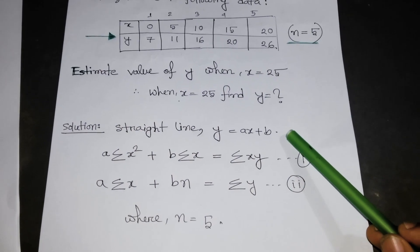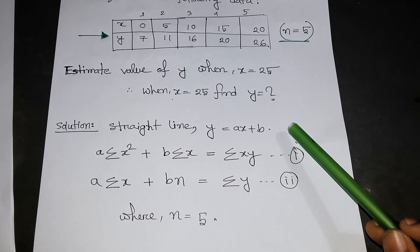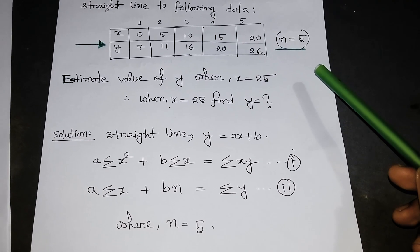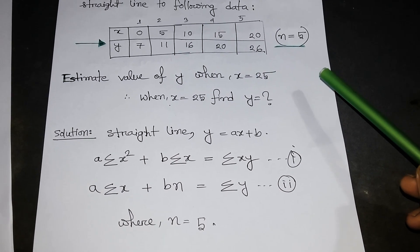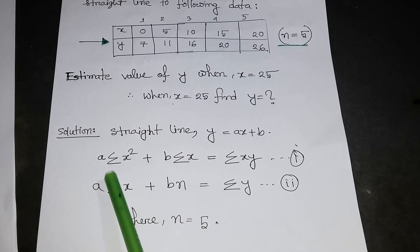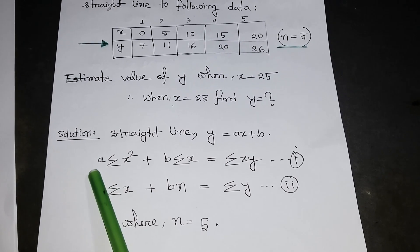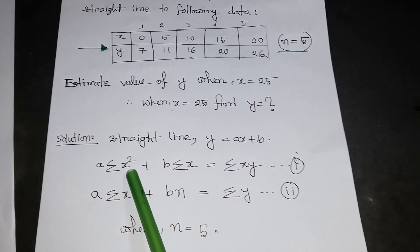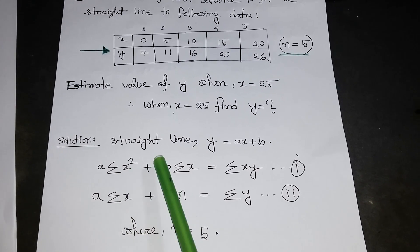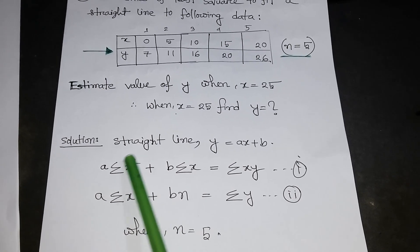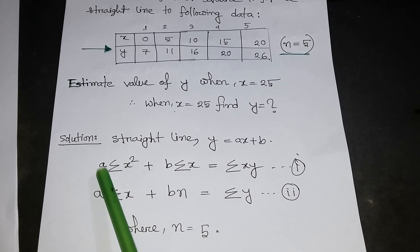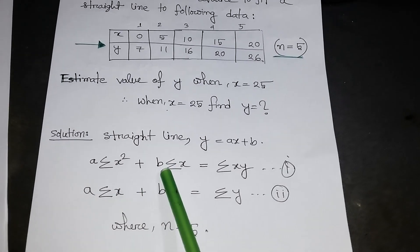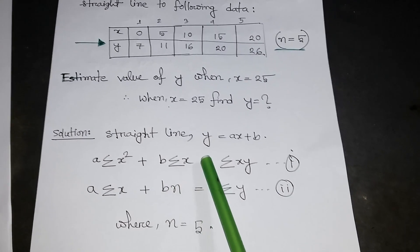Let's get into the solution. We know the equation of a straight line is Y = aX + b. To solve this linear curve fitting equation, we need two formulas. The first is: a times the summation of X² plus B times the summation of X equals the summation of XY.